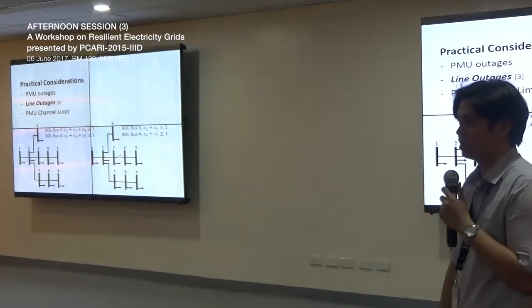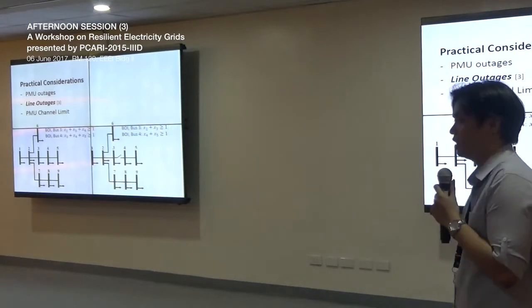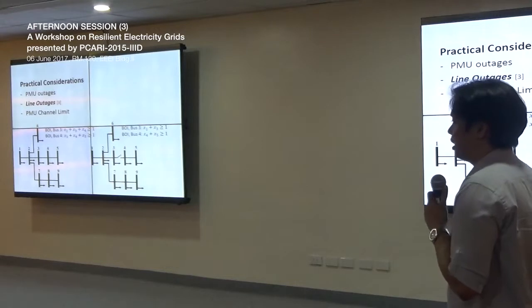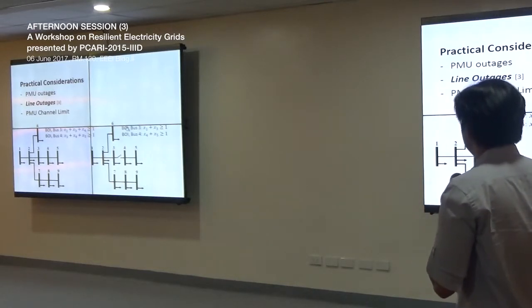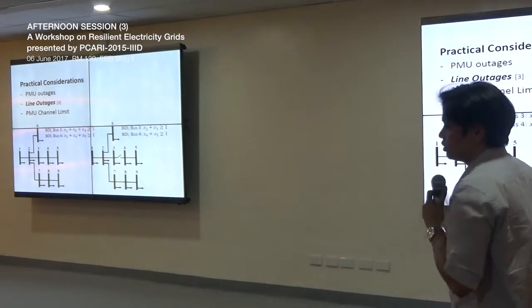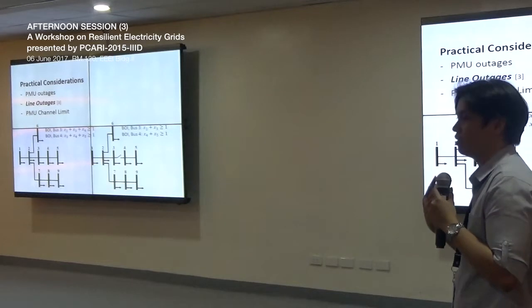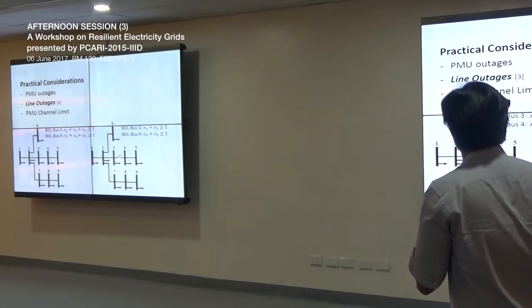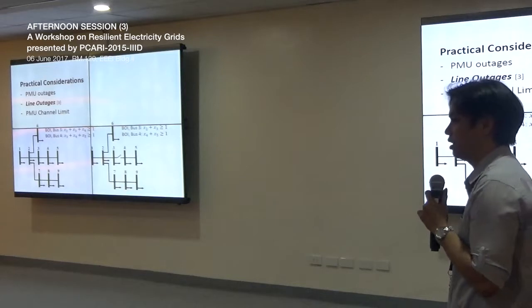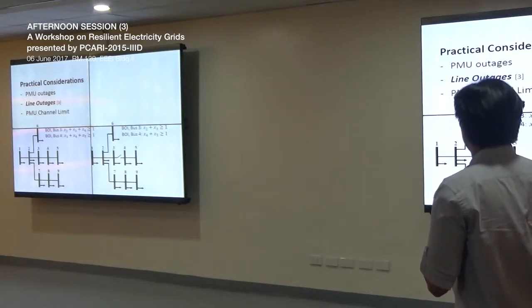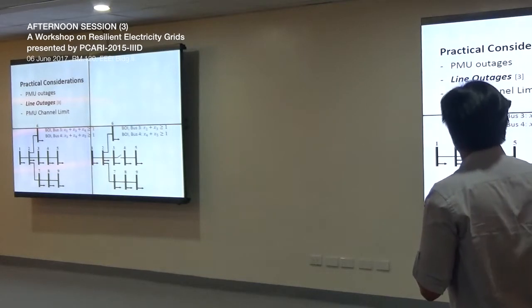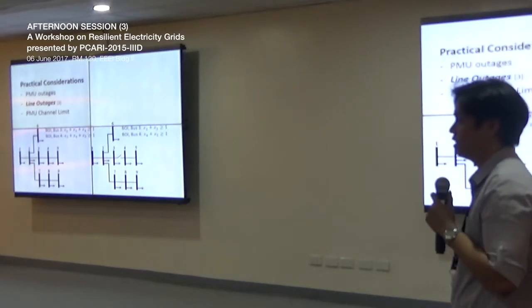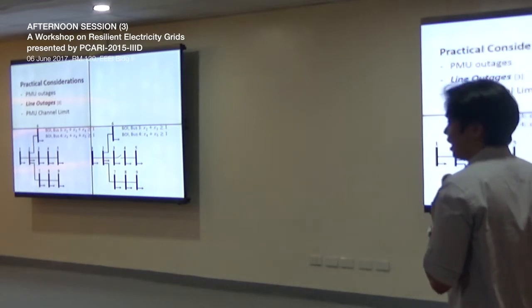Another consideration is line outages. Sometimes there will be faults in lines, or network switches for load curtailment or islanding, where part of the network is controlled by a switch by completely disjoining it from the network or by online reconfiguration. For cases where sub-networks are completely disjoined, a network decomposition may be performed. For example, buses 4 and 5 can be completely disjoined from the entire network, meaning no other connections exist from this sub-network to the rest.